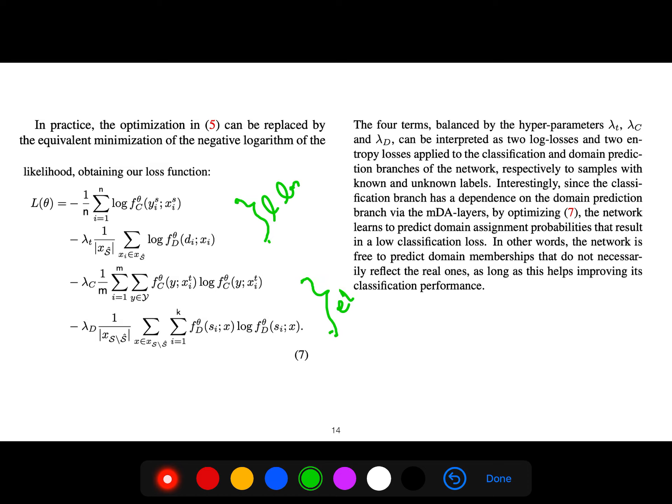So since the classification branch has a dependence on domain prediction via the MDA layers, so this is domain prediction, for example, then we have classification, classification problem. The network learns to predict domain assignment probabilities that result in a low classification loss. In other words, the network is free to predict domain membership that do not necessarily reflect the real ones, as long as this helps improving its classification performance. So we have created another trouble.